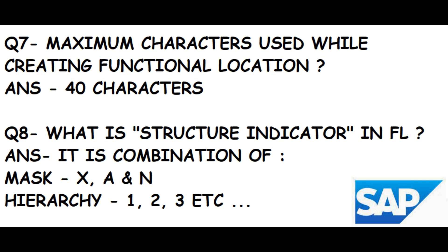Still on question eight: what is a Structure Indicator in Functional Location? The Structure Indicator is a combination of Edit Mask and Hierarchy. In the Edit Mask, X means numeric or alphabetic can be used, A means only alphabetic, and N means only numeric. Hierarchy is represented as 1, 2, 3, 4, and so on, indicating priority levels. A maximum of six hierarchy levels is typically used.